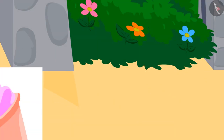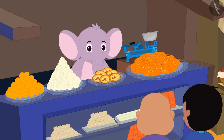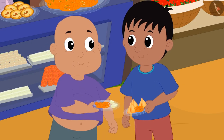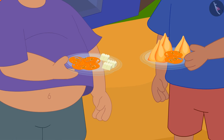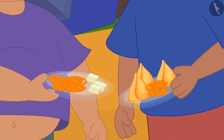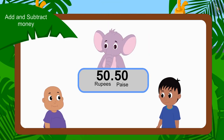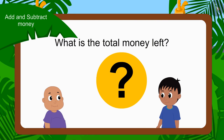He paid Babban for the ice cream and later reached Appu's sweet shop. They ate a stomach full of samosa, jalebi, and barfi. If they gave Appu a total of 50 rupees 50 paise for all the things, can you tell how many rupees are left with both of them now?